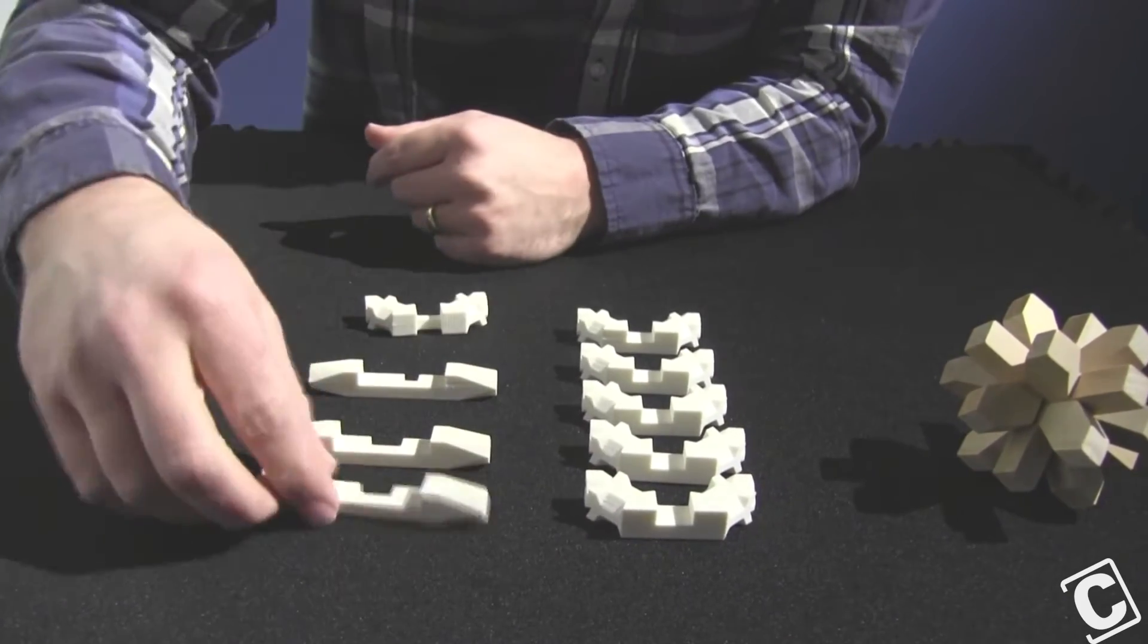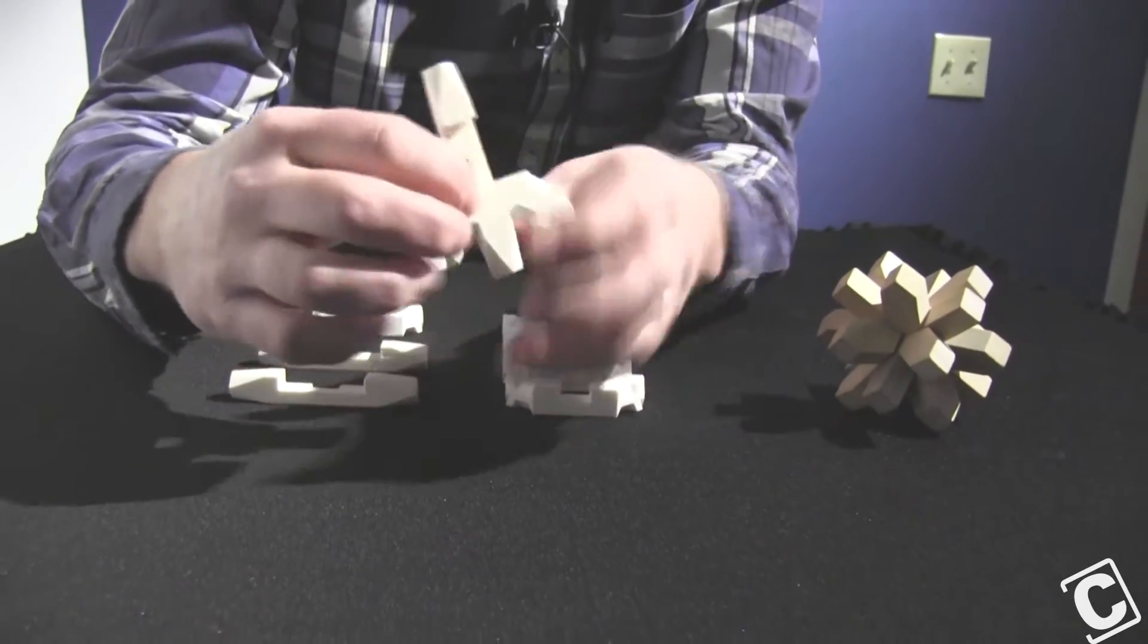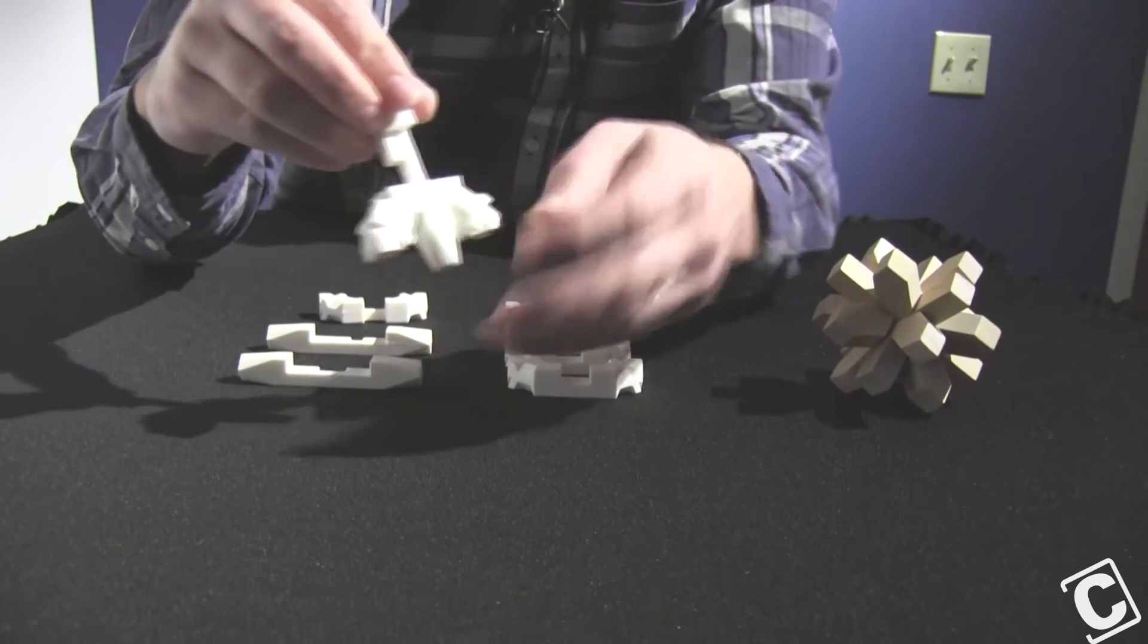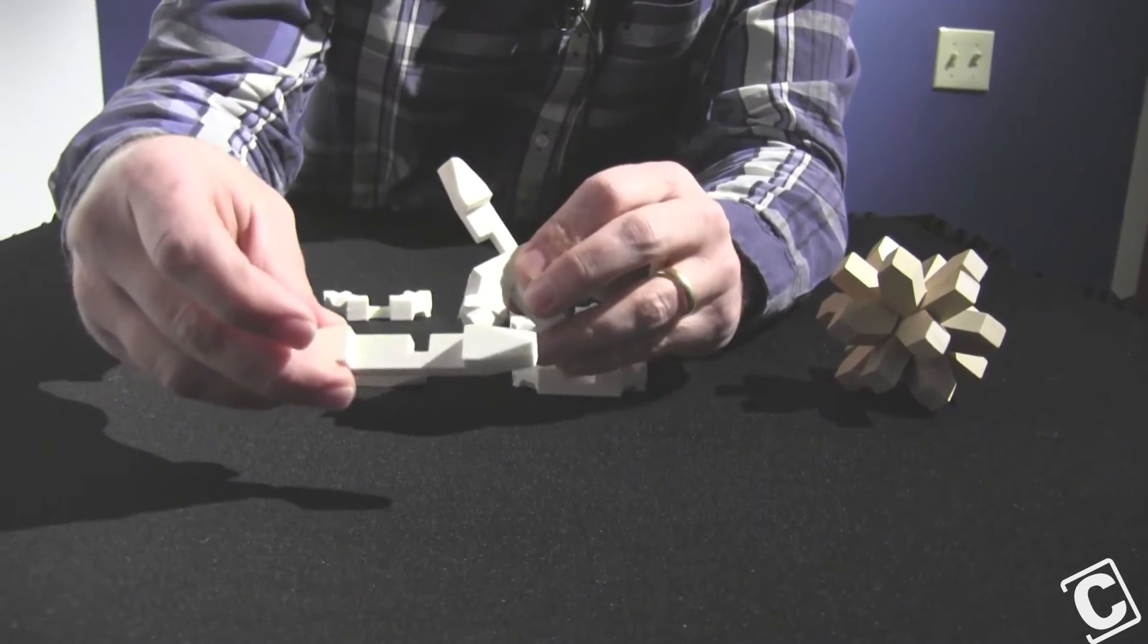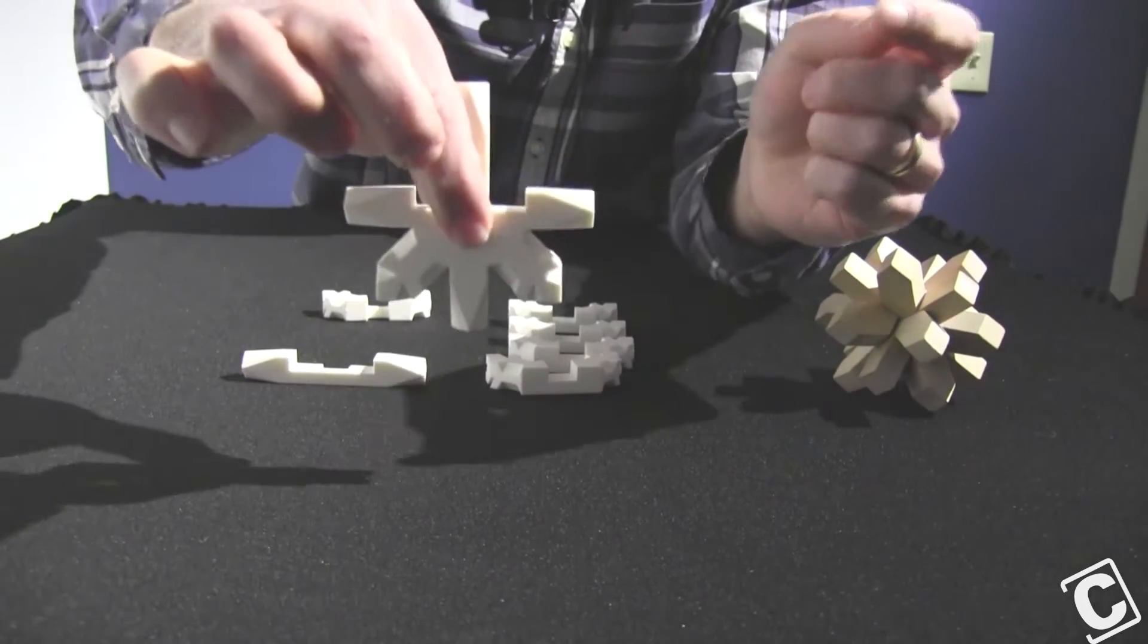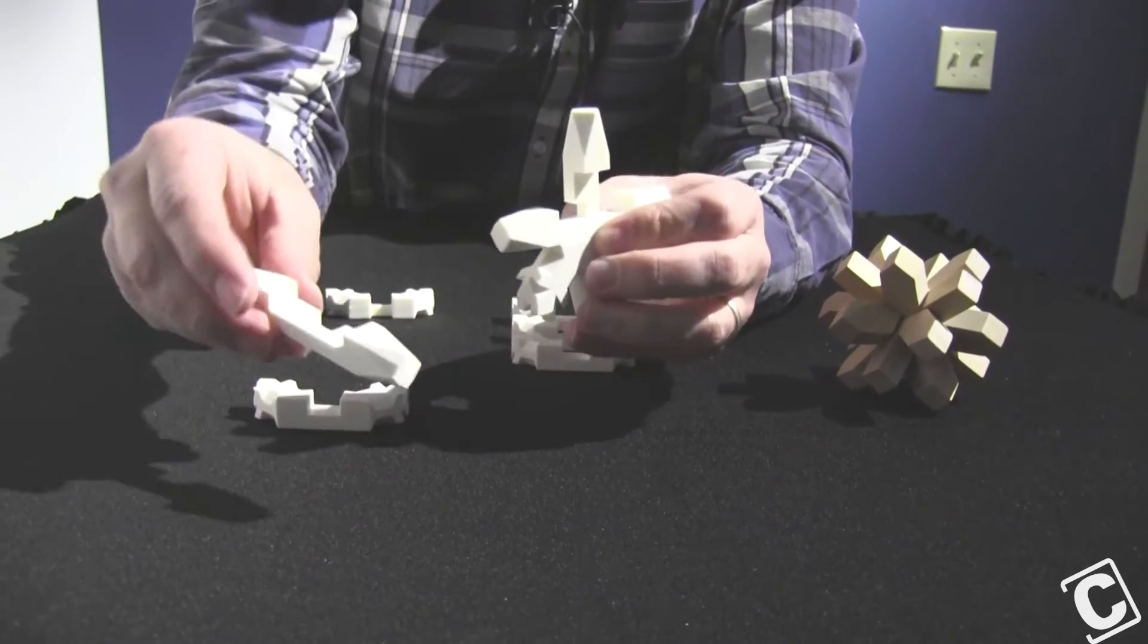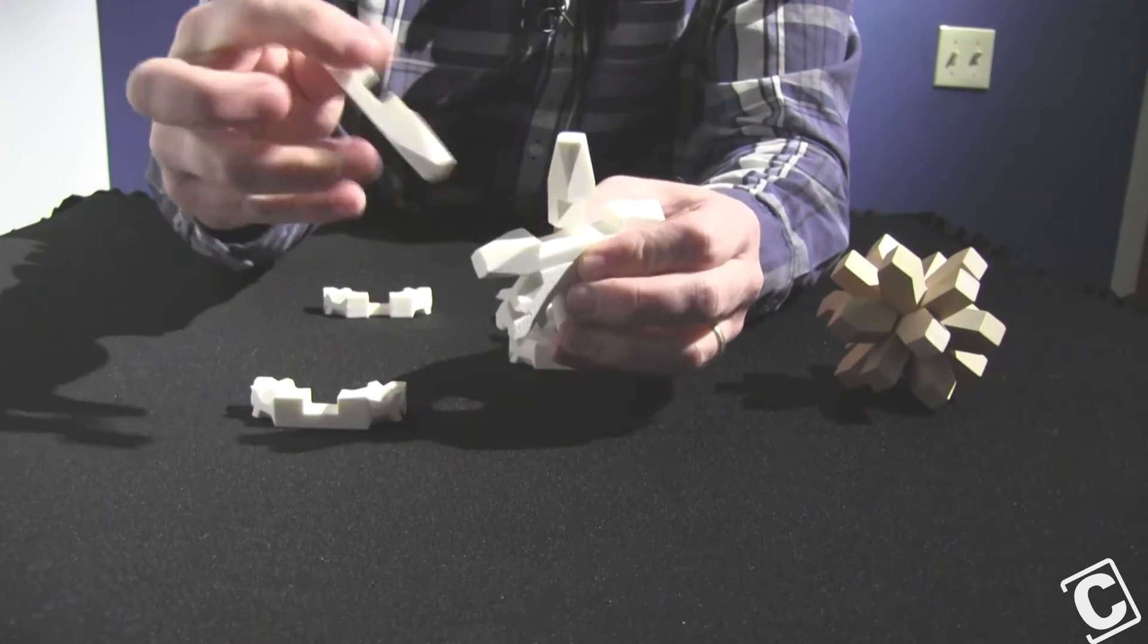You start with one of these. Take the crooked piece and put it on the bottom like so. Then grab the one with the notch in it and put it on so it lines up like a straight star there.